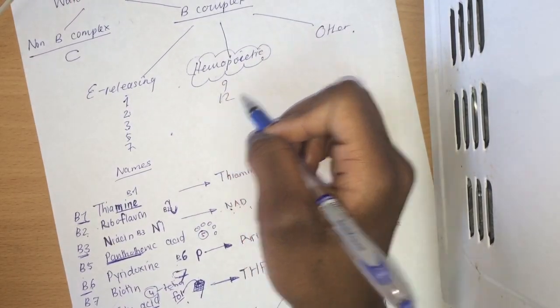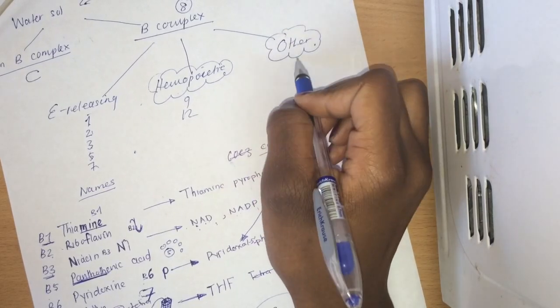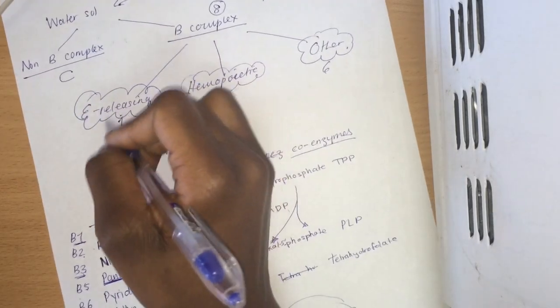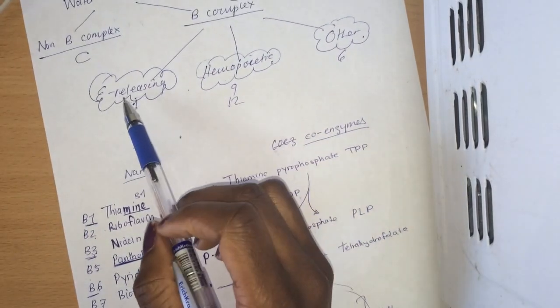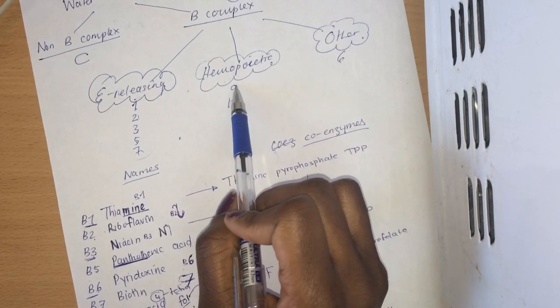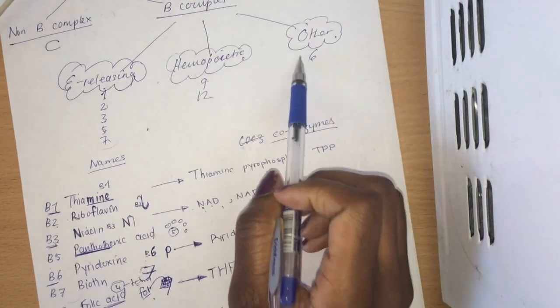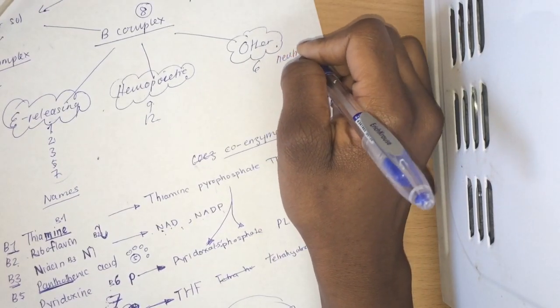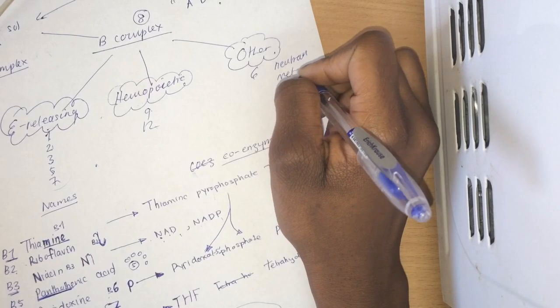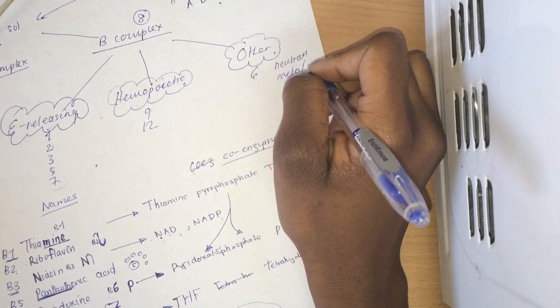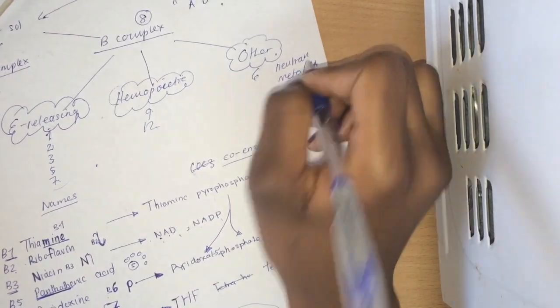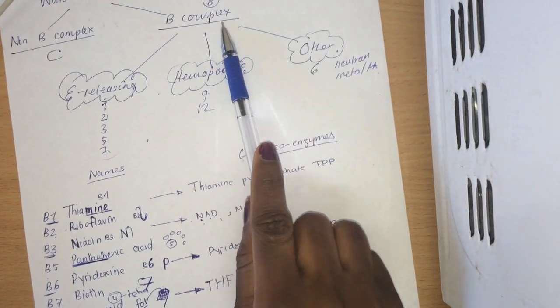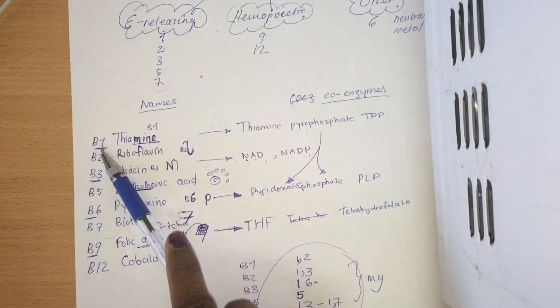And of course you have the other, the remaining one is six. So the main function of energy, of these B complex vitamins, is to release energy. The main function of 9 and 12 is to produce blood cells. And the main function of B6 is to produce neurotransmitters and for the metabolism of amino acids. So yes, there we've covered the B complex vitamins, the numbers, their names, their coenzymes, their recommended daily allowances, and their functions.